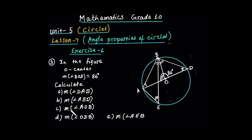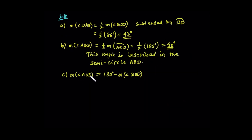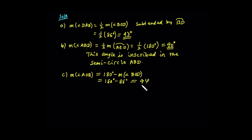The measure of angle AOB and angle BOD are supplementary angles. They are equal to 180 degrees. And this is equal to 180 degrees minus 86 degrees, and the result becomes 94 degrees.